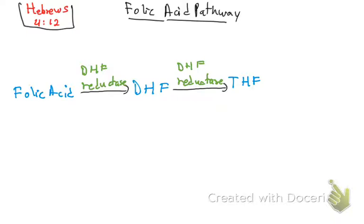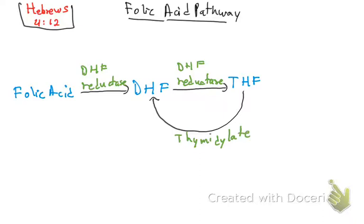Now, this tetrahydrofolate needs to come back to become dihydrofolate. In coming back, it needs another enzyme — you need a synthase. That enzyme is called thymidylate synthase. So now we have two enzymes: dihydrofolate reductase and thymidylate synthase.